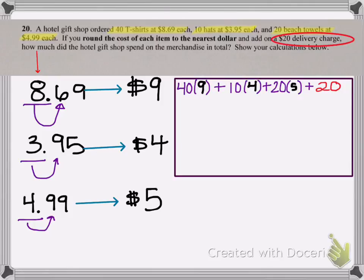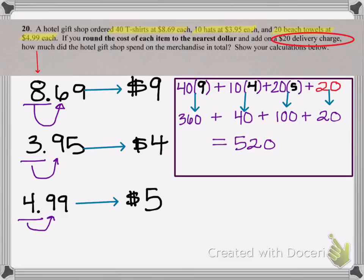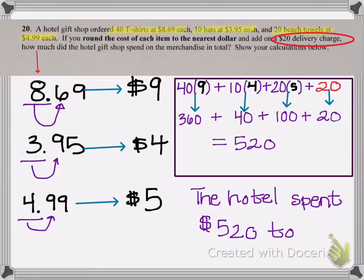Let's do all the multiplication next, because we're following order of operations. So this becomes 360, plus 40, plus 100, plus the $20 delivery charge, and the sum is 520. This means that the hotel spent $520 total.